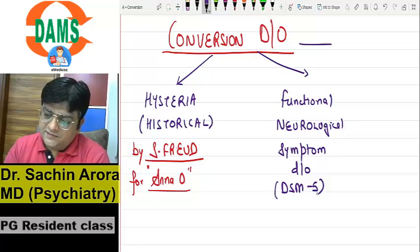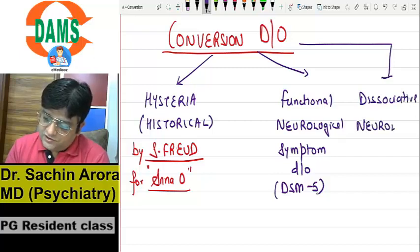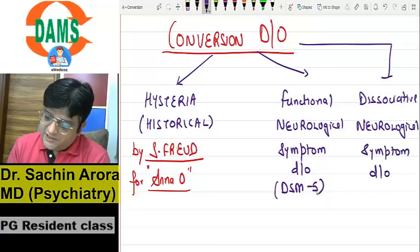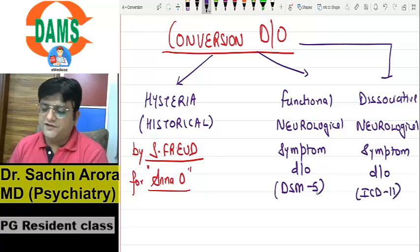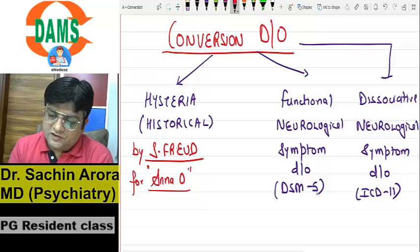The latest name is Dissociative Neurological Symptom Disorder — this name is given in ICD-11. In DSM-5 they have given the name Conversion Disorder.